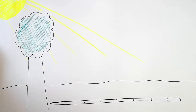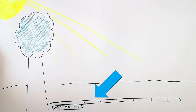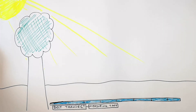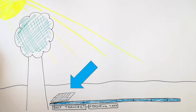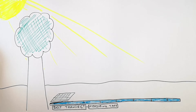Firstly, lay the belt transect away from the tree. The belt transect in this case is a measuring tape. You then lay the quadrat at the first point on the belt transect at zero metres away from where you're measuring.